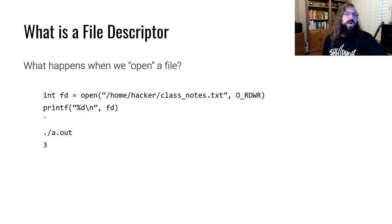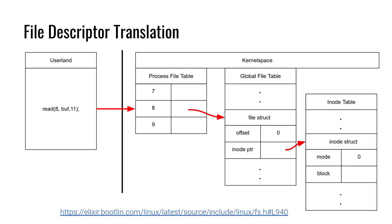So what is the significance of this, and why do I need to pass this 3 back to the kernel when I want to interact with this file? Well, inside the kernel, for every process, there is a process file table. This process file table is a listing of these integer values, and for every one of these integer values, there is a pointer to a file struct. This file struct exists in a separate table known as the global file table. The global file table has an entry for every file that is currently open on the system.